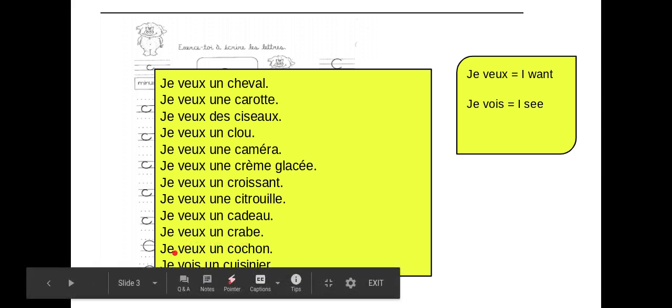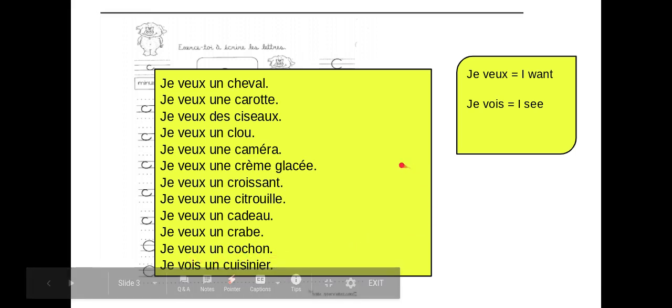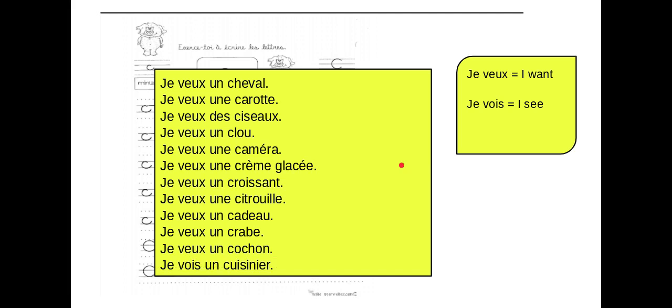Finalement, je vois un cuisinier. Je vois un cuisinier. That means I see a cook. Je vois un cuisinier. Okay, there it is, clear. Je vois un cuisinier.